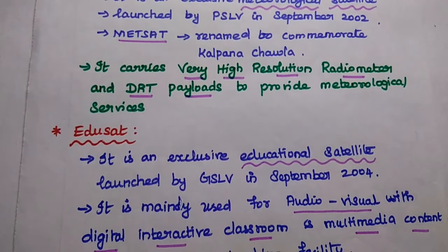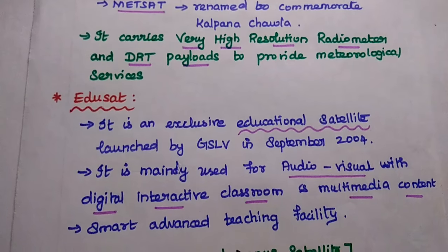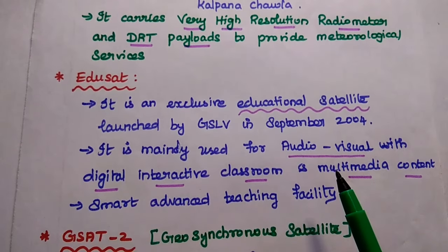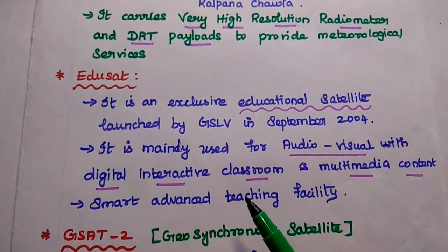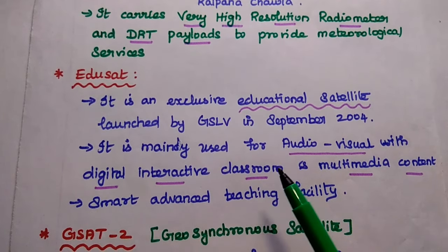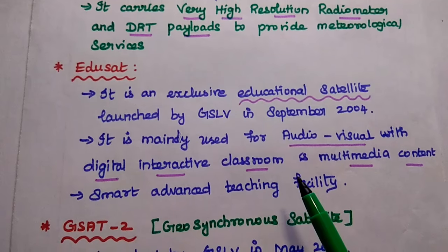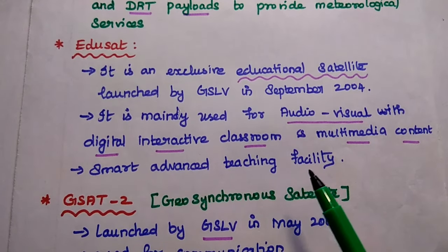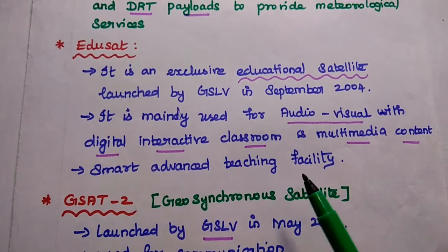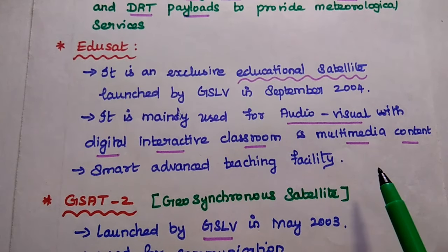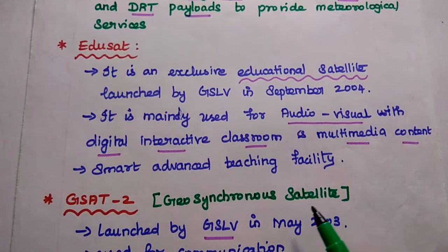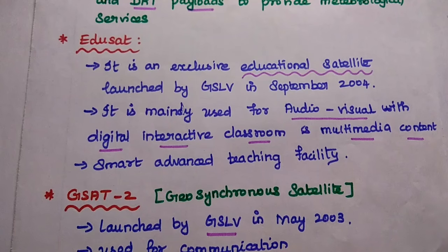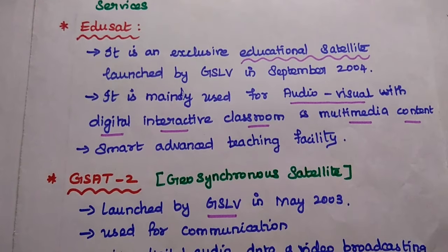The next one is EDUSAT, an exclusive educational satellite launched by GSLV in September 2004. GSLV means Geosynchronous Satellite Launch Vehicle, and PSLV means Polar Satellite Launch Vehicle. EDUSAT is mainly used for audio-visual digital interactive classrooms and multimedia content, and can be described as an advanced small teaching facility. It is an exclusive educational satellite.